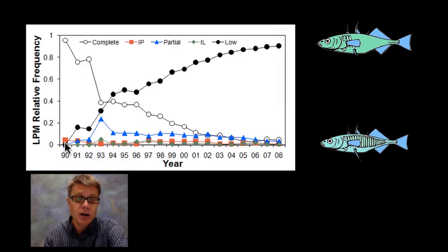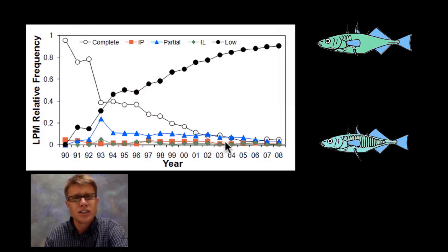So in 1990 they show up. And there's not hardly any of these low armored sticklebacks. But as they start observing it over the next 20 years we see an increase in the low armored sticklebacks. And then we see a decrease in the fully armored stickleback. And there's really one gene that's determining the number of plates that we have on each of the different fish.